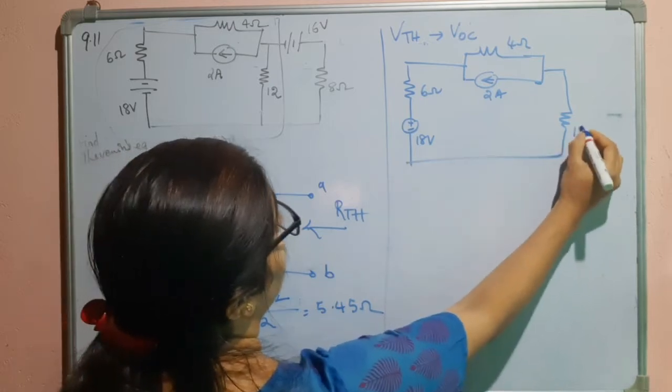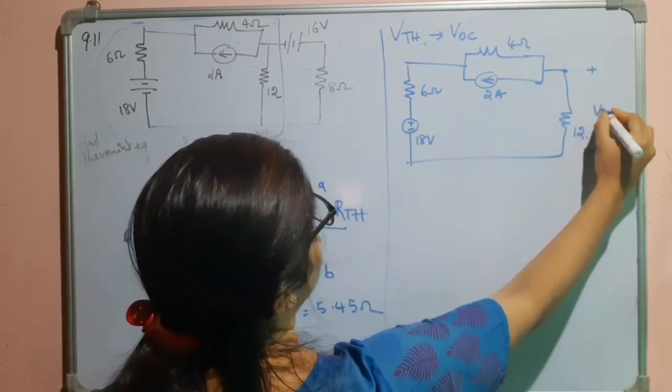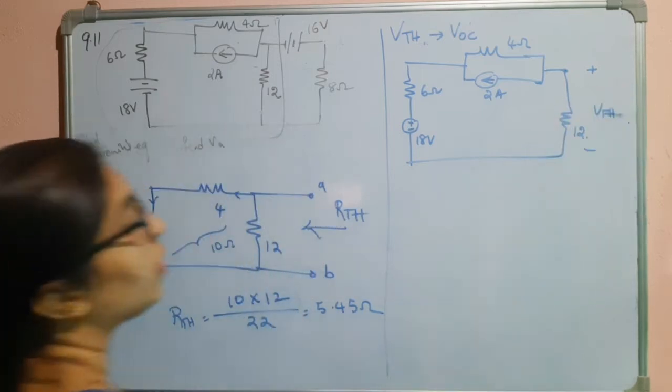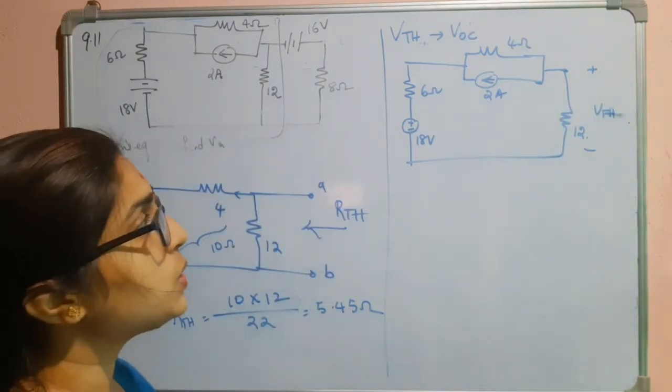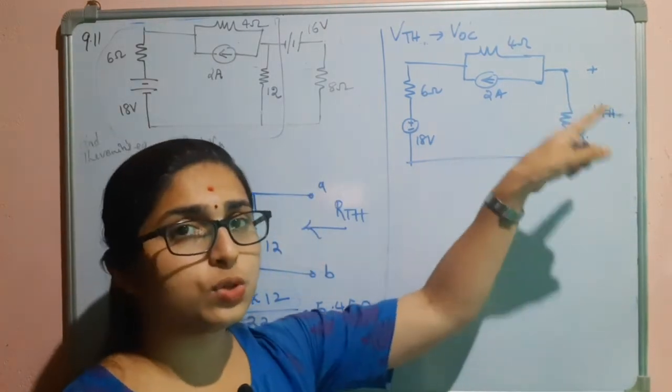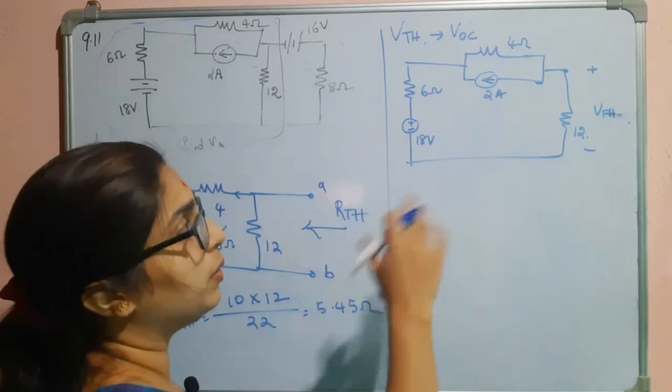This one I have to find it out, this is VTH. So, what we can do is, we can transform this current source to voltage source that will make our calculation easier.